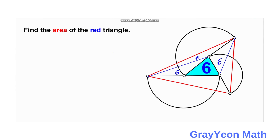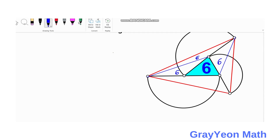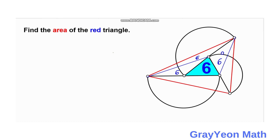Next, we compare this triangle to another triangle. They have the same base because their bases are both radii of the smaller semicircle on the right. They have the same base and the same height, so this triangle is also 6 square units.